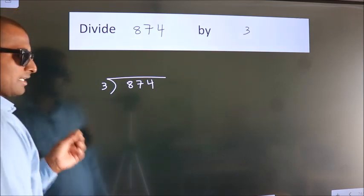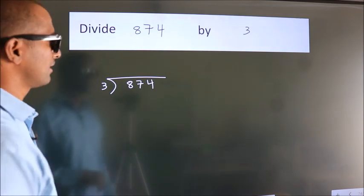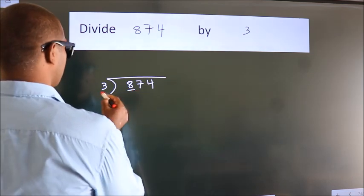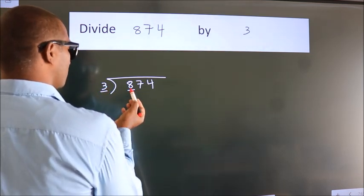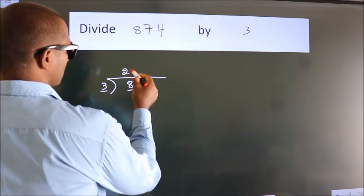This is your step 1. Next, here we have 8, here 3. A number close to 8 in the 3 table is 3 times 2, which is 6.